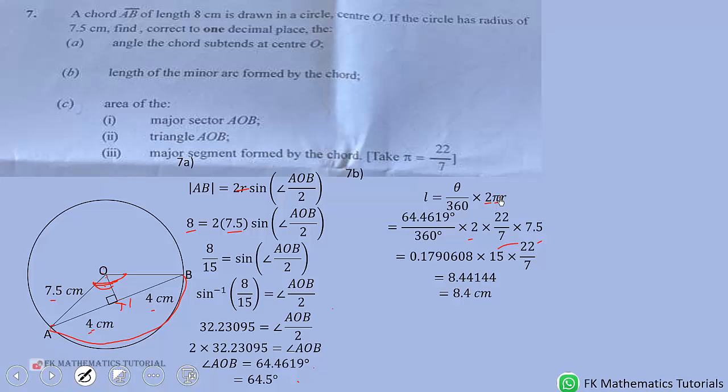Then we are calculating the area of major sector AOB. So area of a sector is given by theta over 360 times pi r squared. So this time the theta is this one. So we subtract this angle that we found here, AOB, from 360.